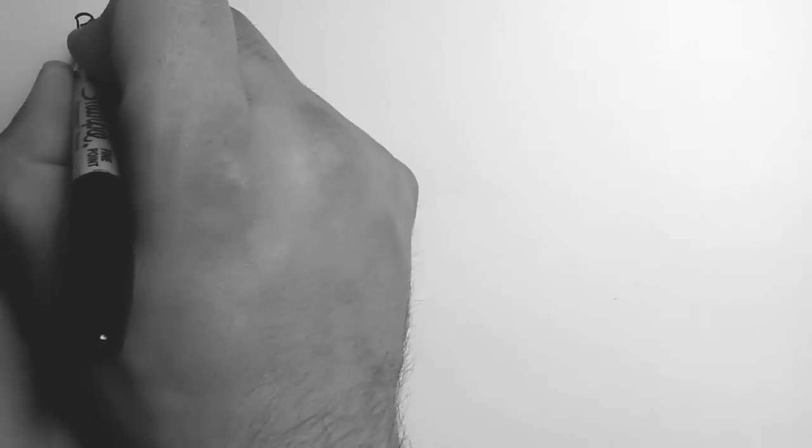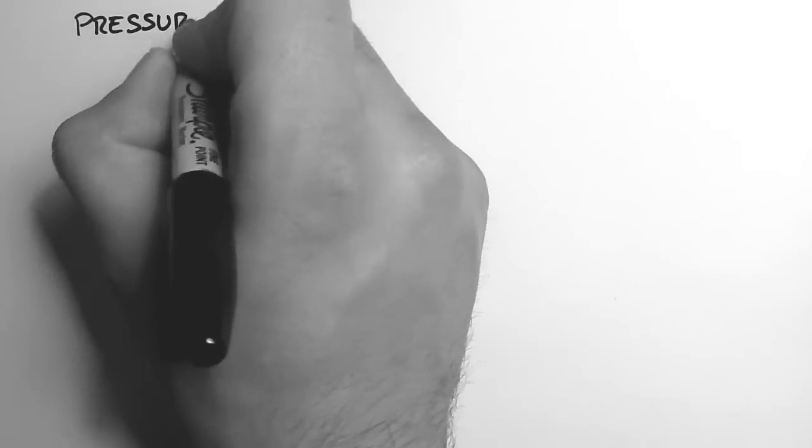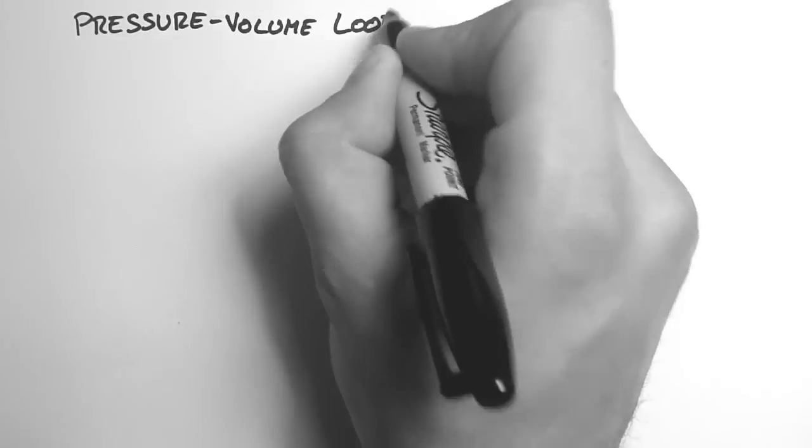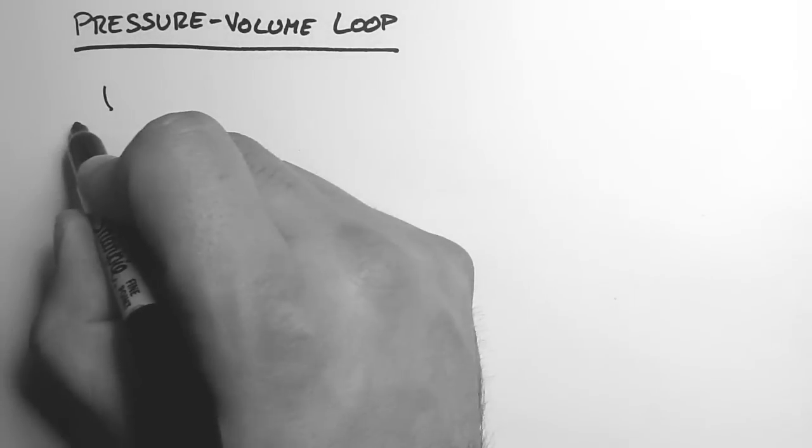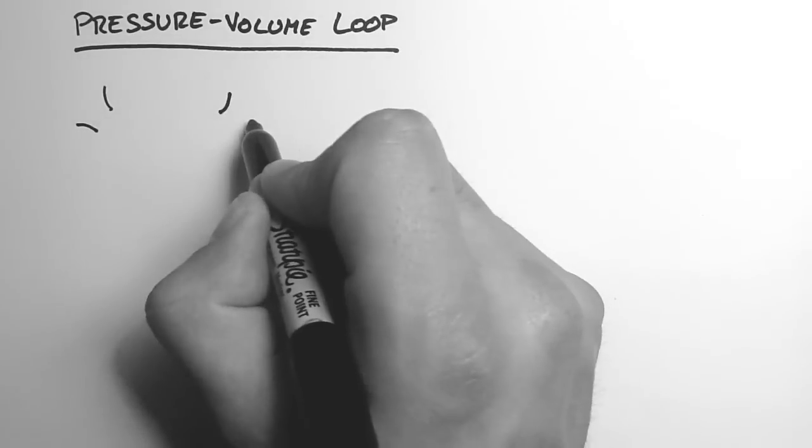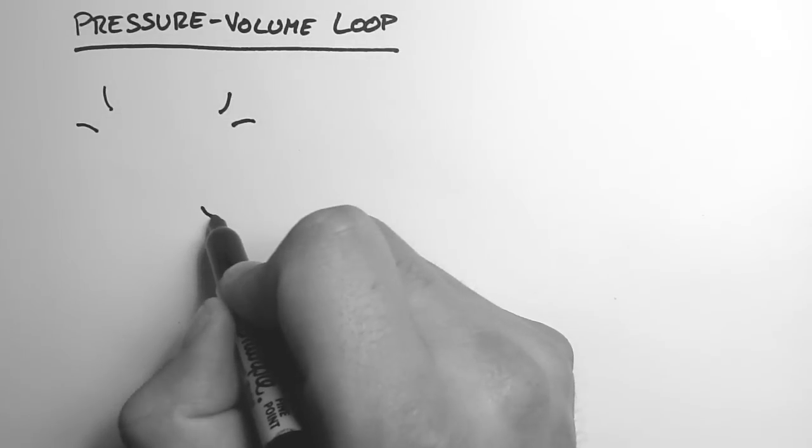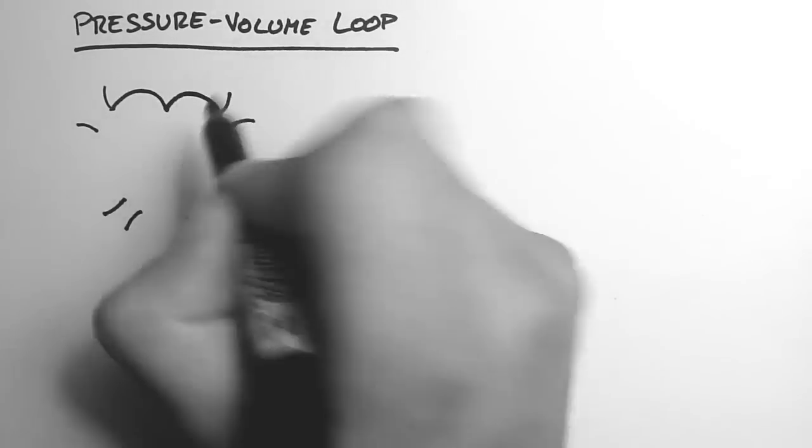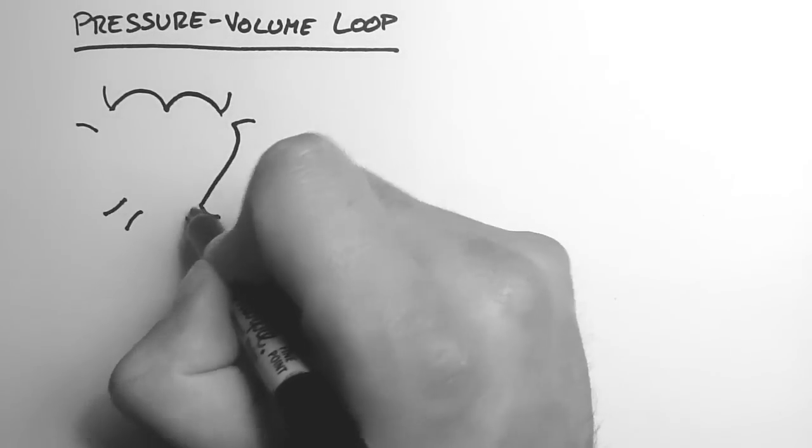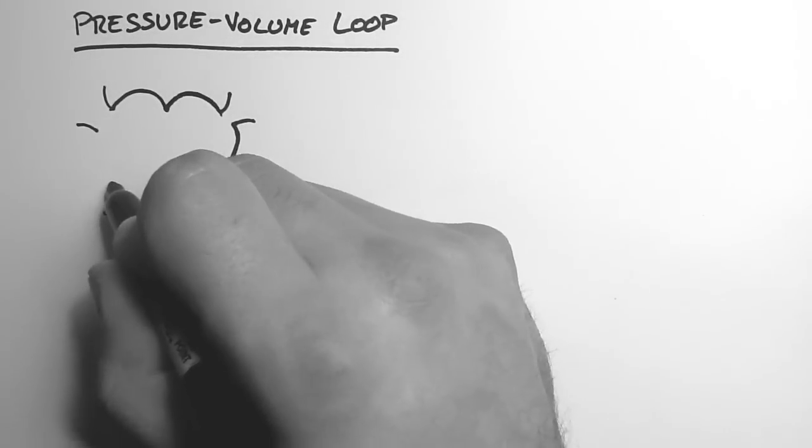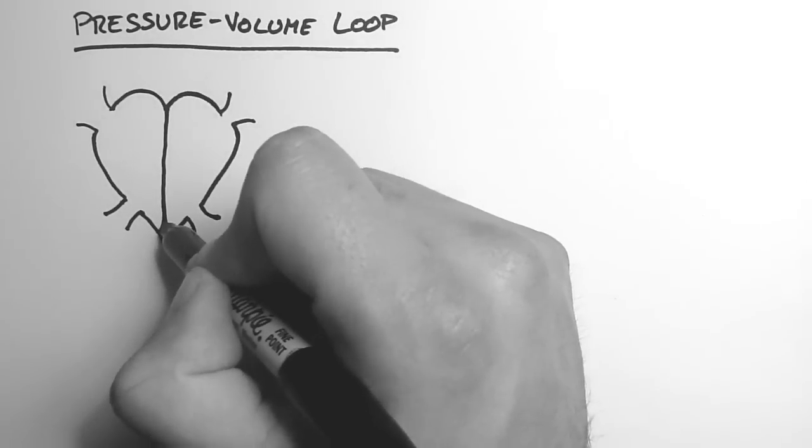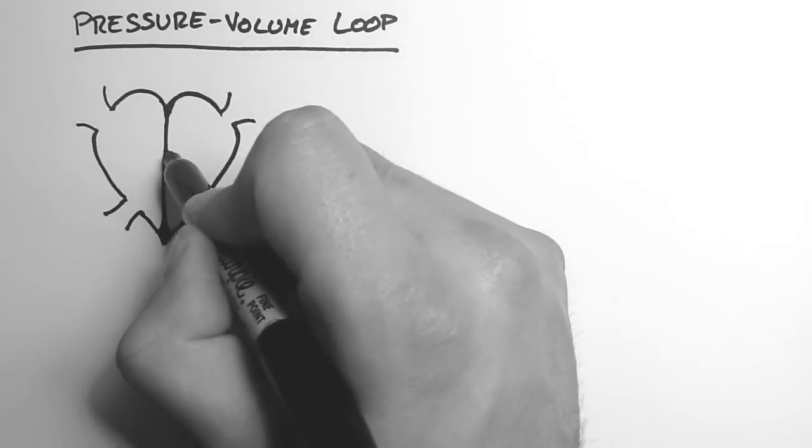In this video, I'm going to talk about the pressure-volume loop of the cardiac cycle. So the pressure-volume loop relates to the pressure and the volume of blood within the left ventricle.